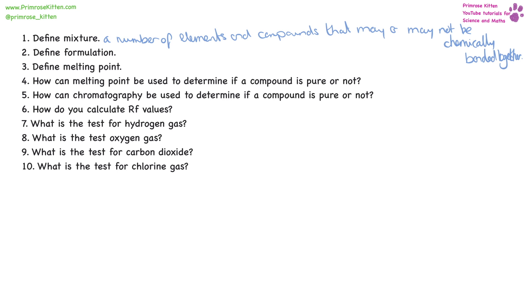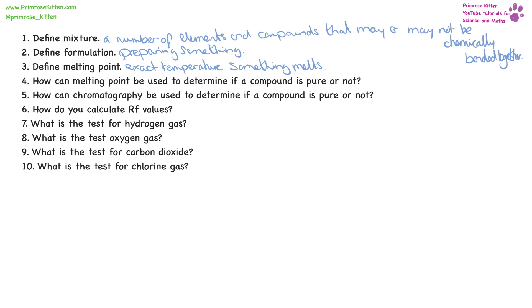Formulation is preparing something. Melting point is the exact temperature something melts. Melting point can be used to determine if a compound is pure or not, because a pure compound should melt exactly at one temperature. If it melts at a different temperature or over a range of temperatures, it's not pure.